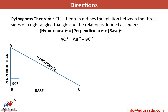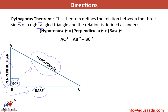Now we move to the Pythagoras theorem, which will be used in many questions. This theorem defines the relation between the three sides of a right-angled triangle. The sides forming the 90-degree angle are called the base and the perpendicular, and the side opposite the 90-degree angle is the hypotenuse. The relation is: hypotenuse² = perpendicular² + base².